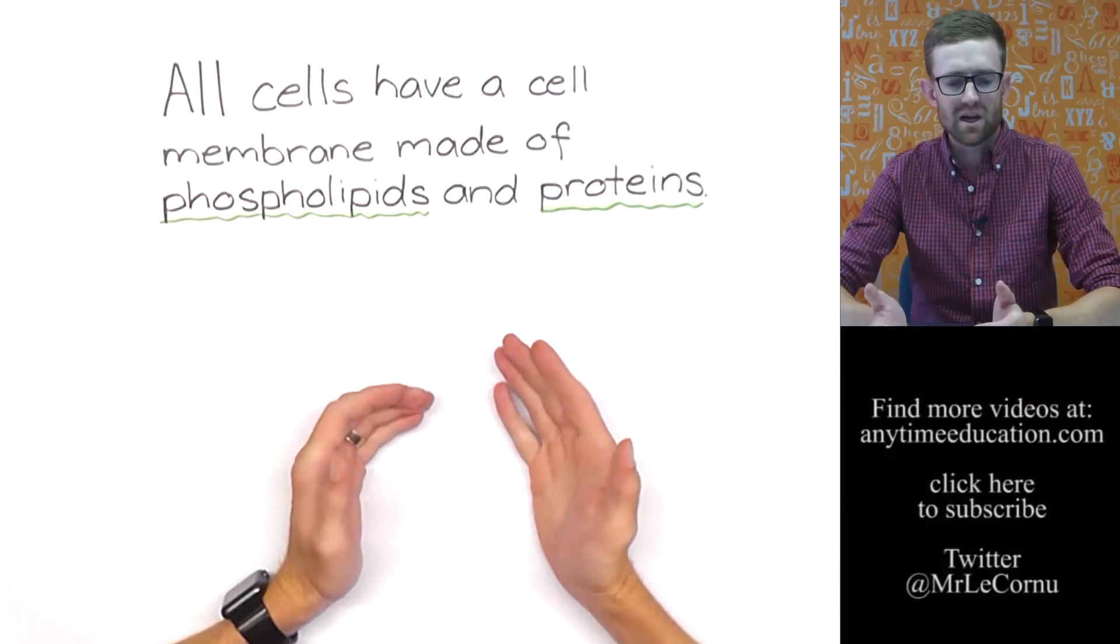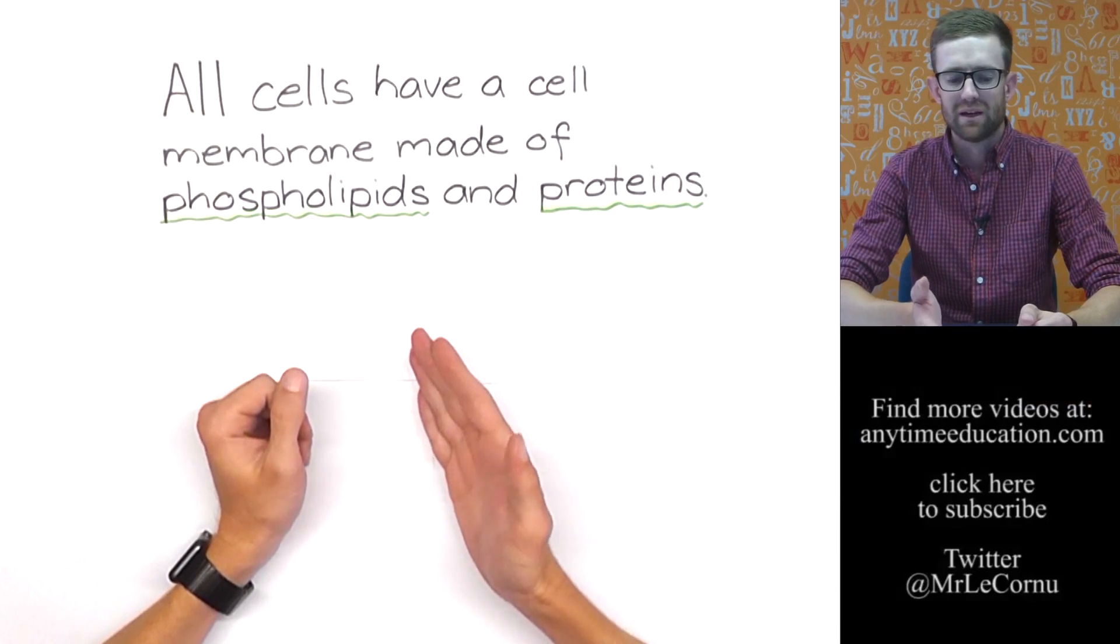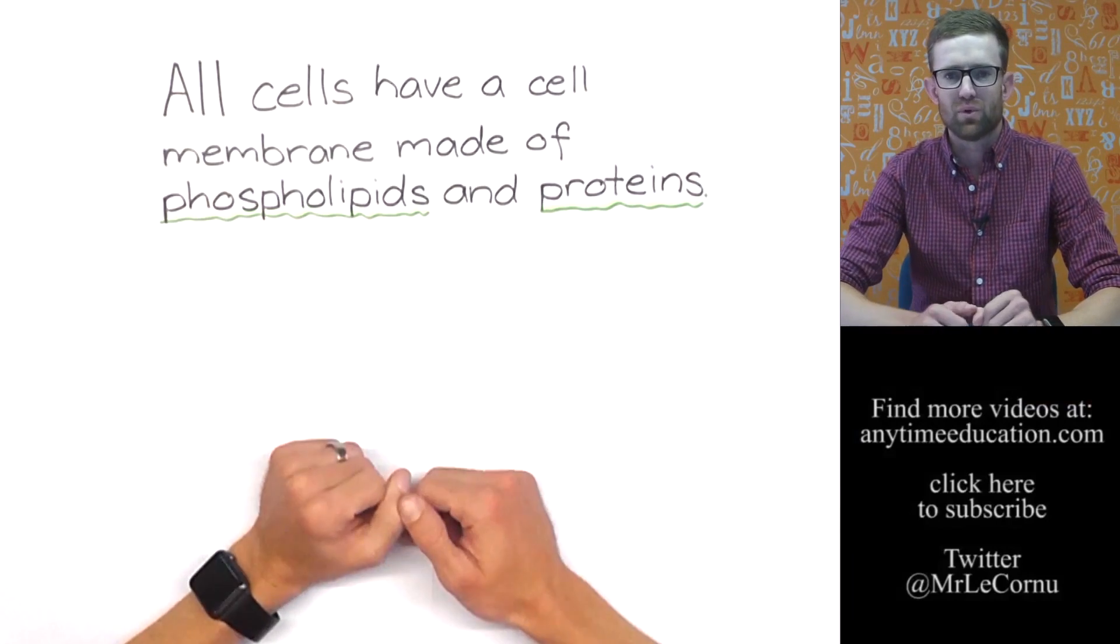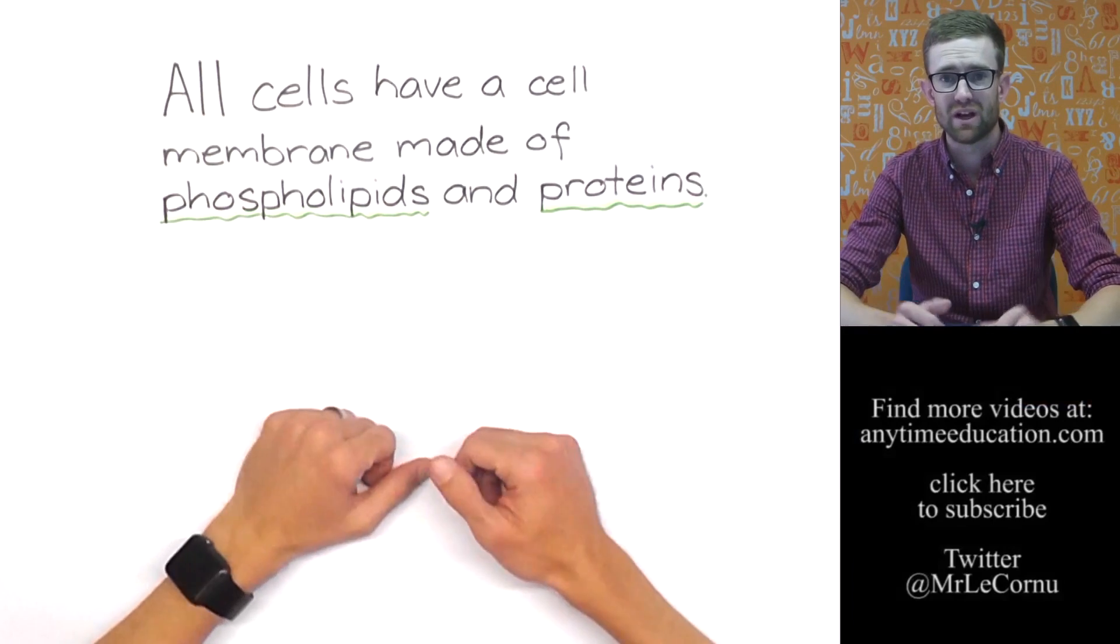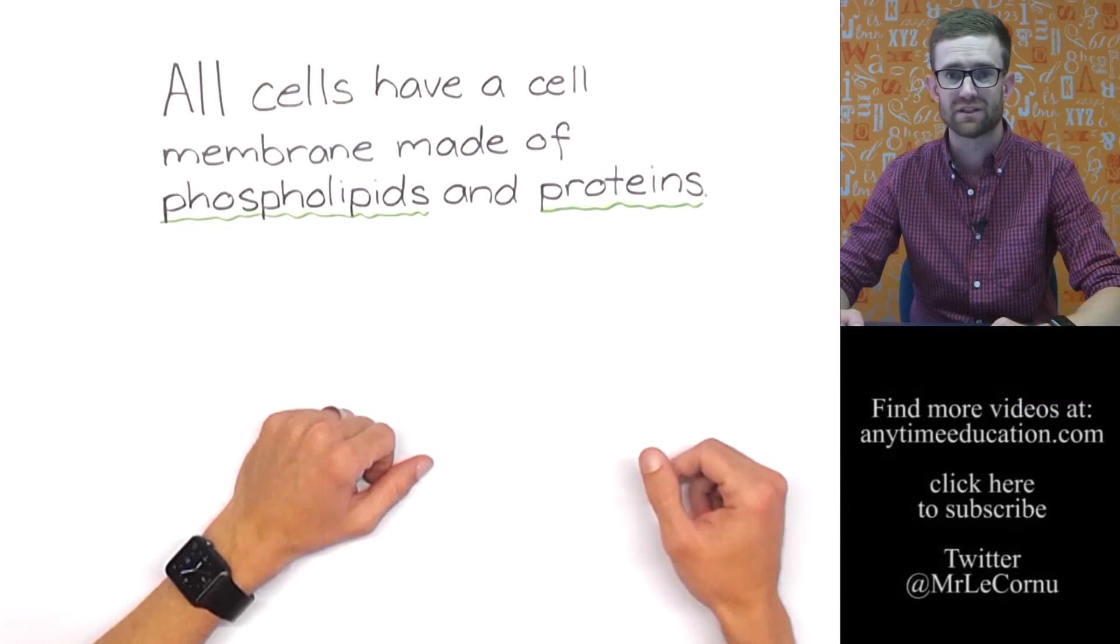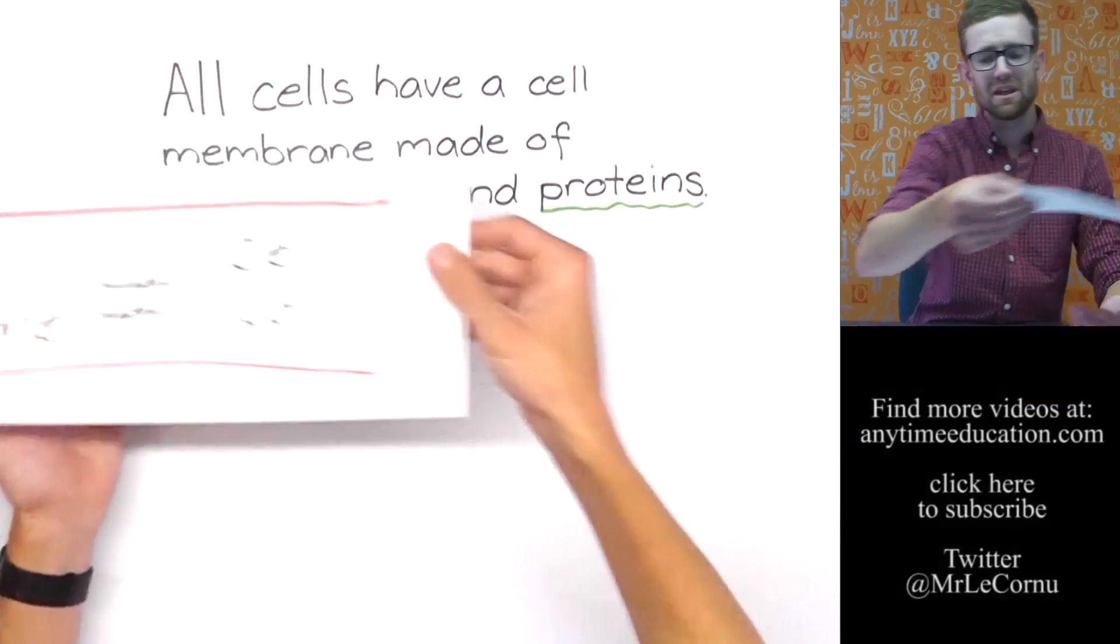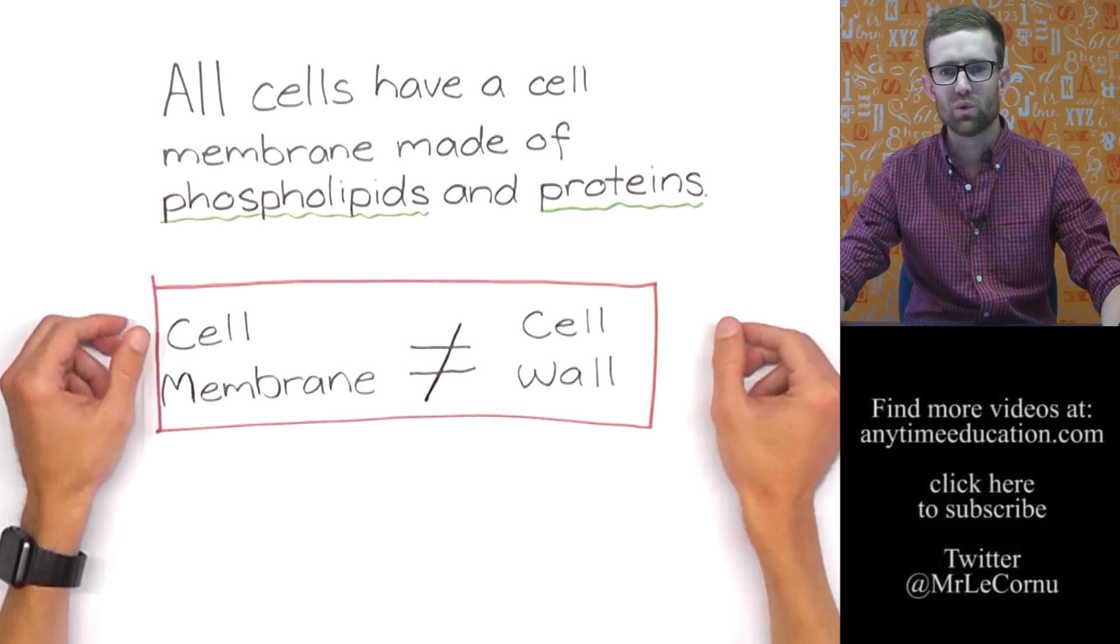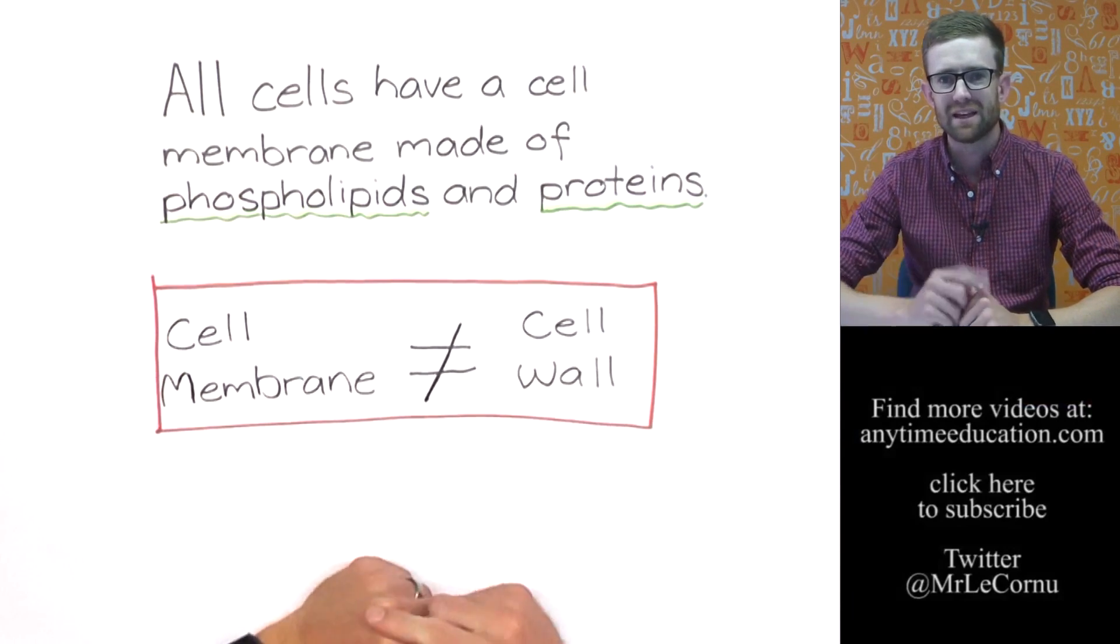So let's start by looking at this key idea: all cells have a cell membrane made of phospholipids and proteins. That is all cells, animal, plant, the eukaryotic cells and prokaryotic cells as well. But the cell membrane is not to be confused with the cell wall. That is often a common mistake that people make, they get those two things mixed up.